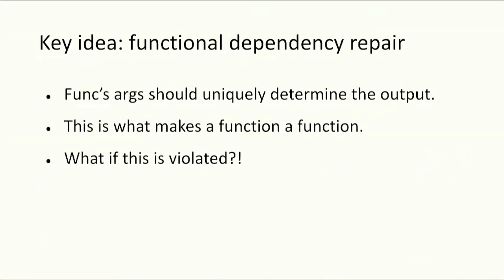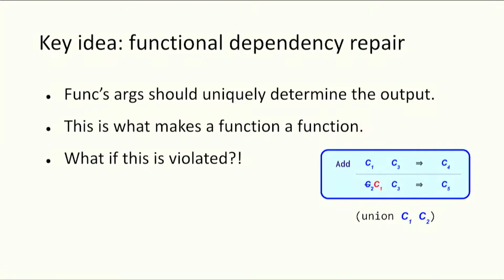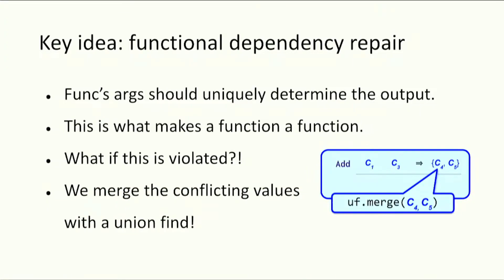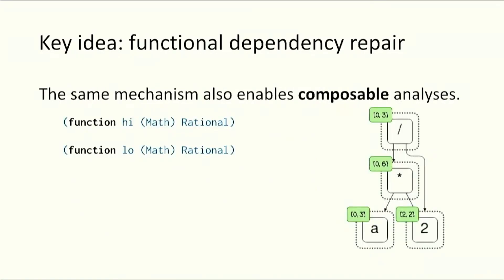At the core of egglog's functional abstraction is functional dependency and functional dependency repair. Functional dependency basically says that the arguments of a function uniquely determine the output — exactly what makes a function a function. But what if functional dependencies are violated? Suppose we call the union operator over C₁ and C₂. The union find merges the two elements and canonicalizes C₂ into C₁. Now the table has two entries with the same input arguments C₁ and C₃ mapped to two different values — a functional dependency violation. We must merge the conflicting elements C₄ and C₅ together, resolving the violation.